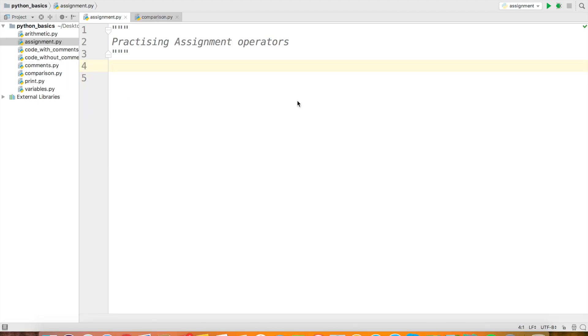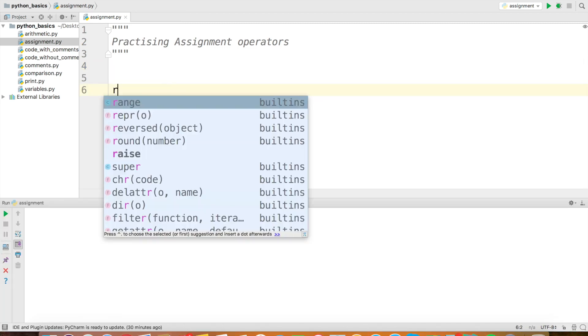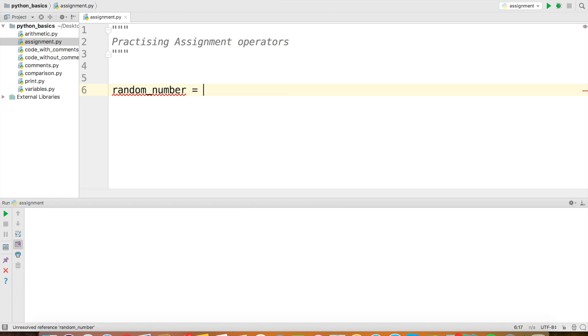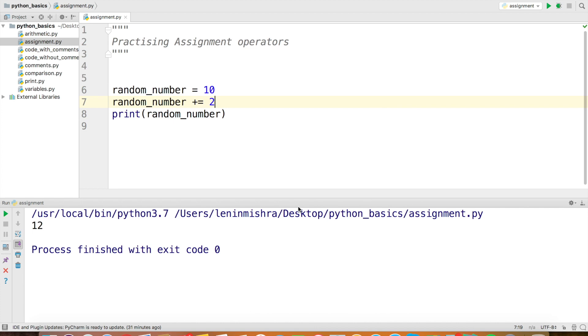Now let's practice some assignment operators. Let's declare a random variable called random_number and assign it the value 10. Now if I do random_number += 2 and print out the result, you can see Python returns us 12.